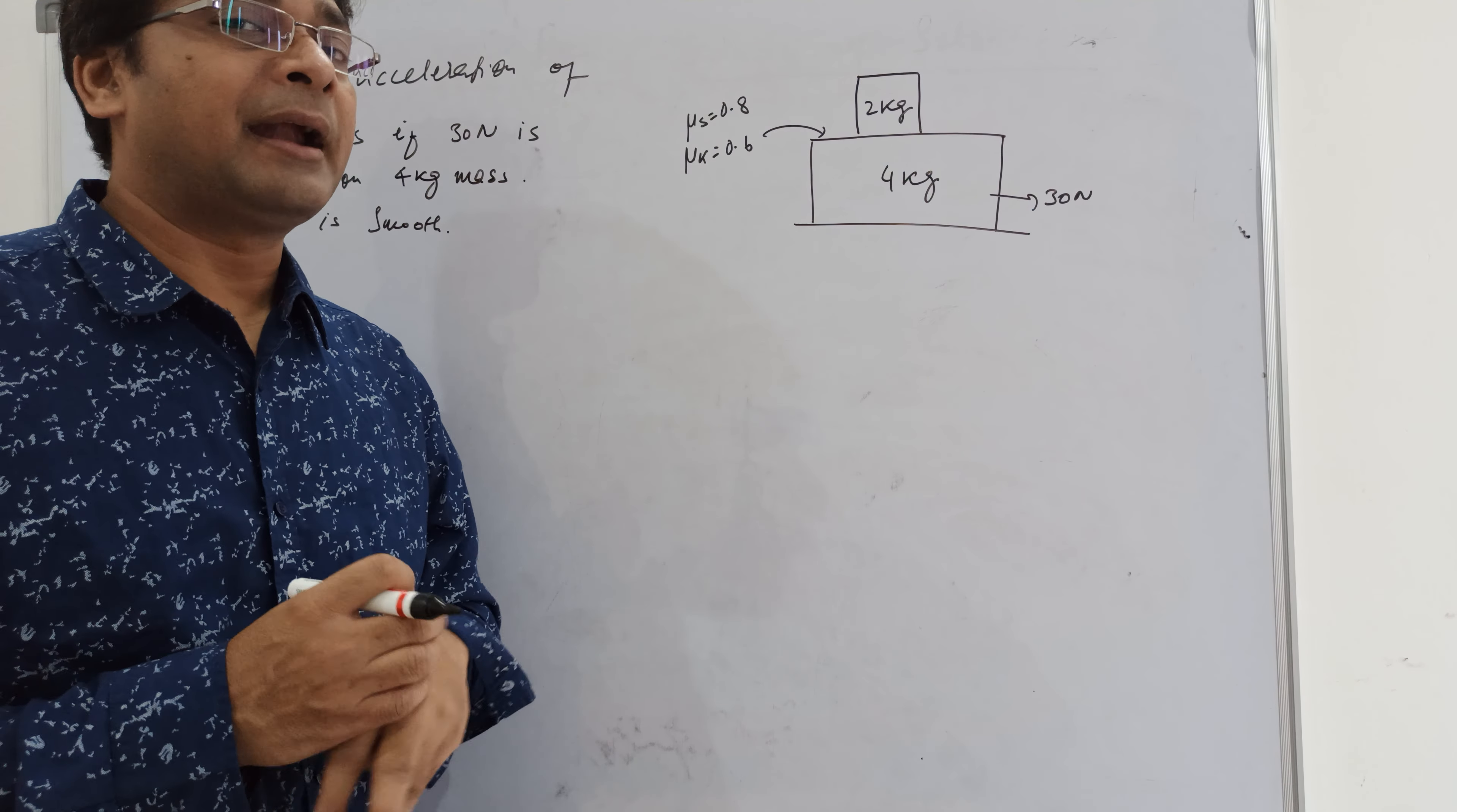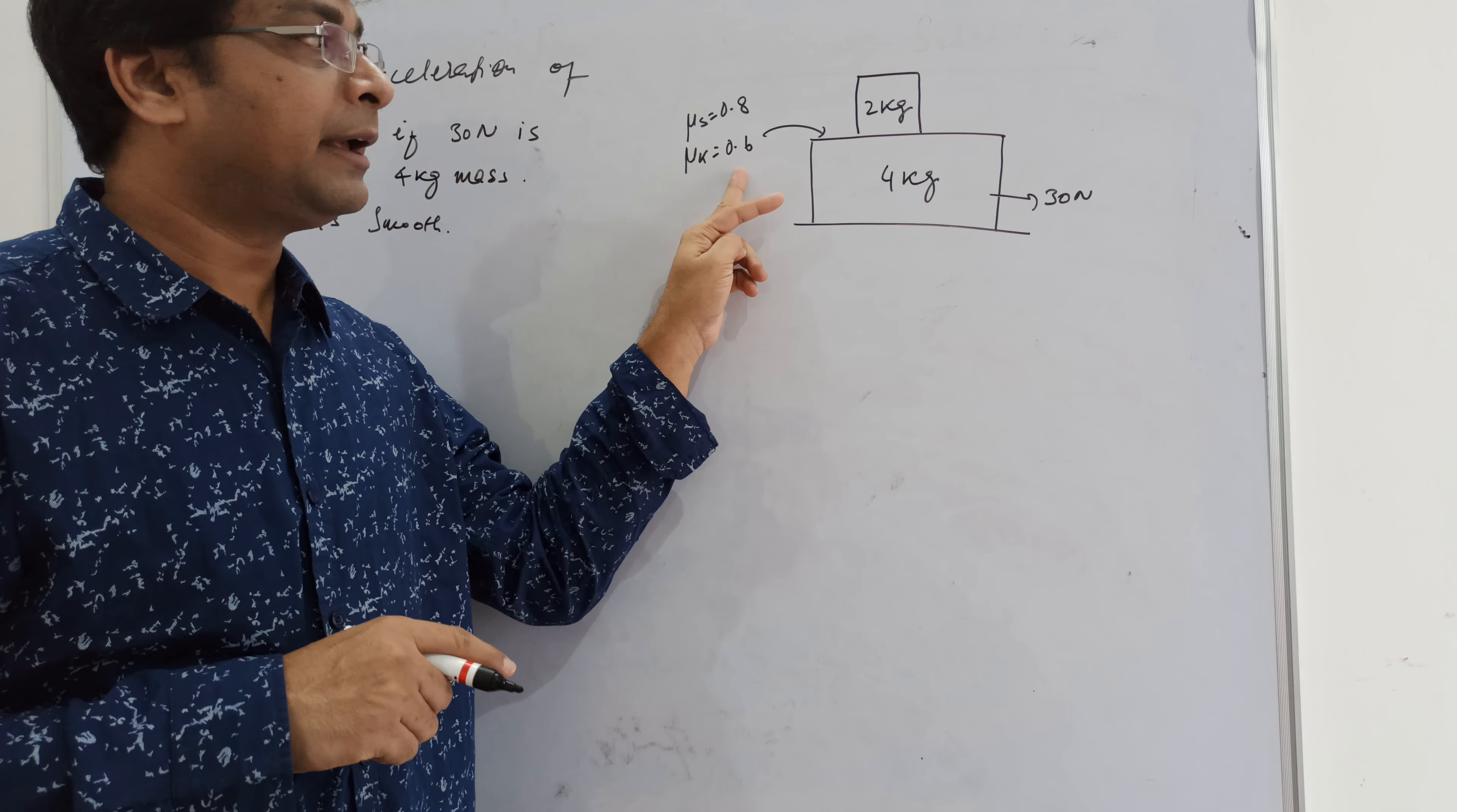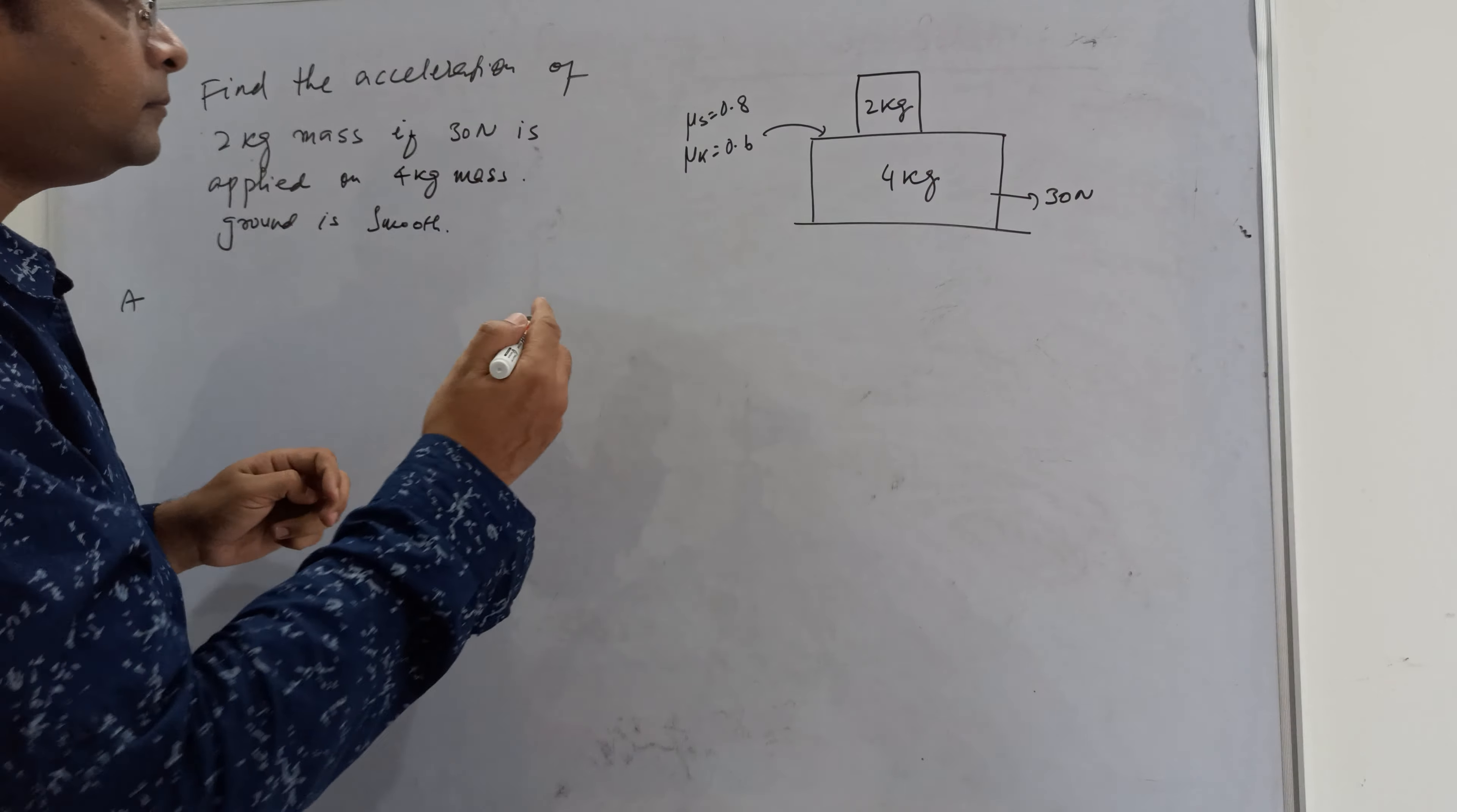In this question we have 2 kg and 4 kg blocks. Static friction coefficient and kinetic friction both are given. 30 newton is acting on this. Now how to decide if this body is sliding over the other or the two bodies are moving together.